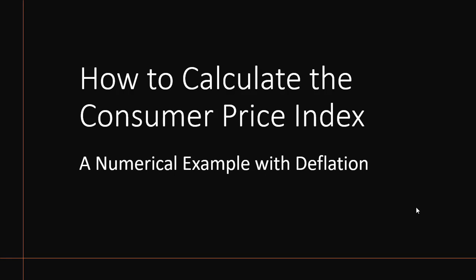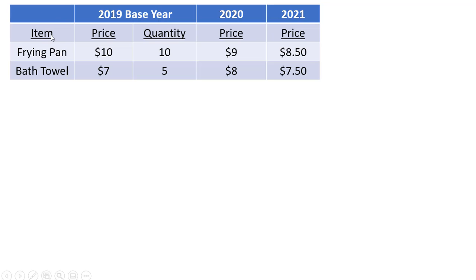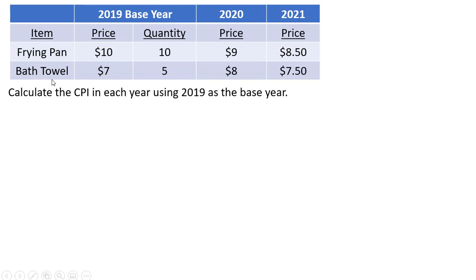Hello, in this video we're going to calculate the consumer price index using a numerical example where we have deflation. Here is our example. We have two goods, a frying pan and a bath towel. We have the base year, which is 2019. We have the price of each item and the quantity — this is our base year quantity. And then we have the prices for the items in 2020 and 2021.